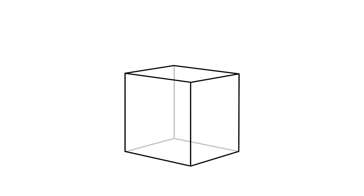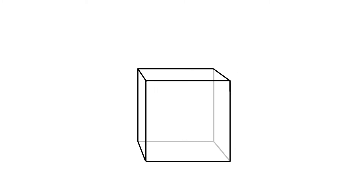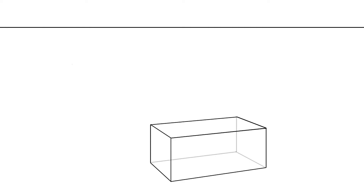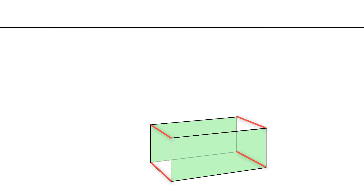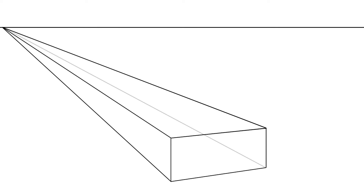If you want your drawings to look 3D, then you will need to create the same illusion. For a box to look like it has depth, its farthest sides will need to be smaller than its closer sides. Edges of a box will need to taper from the closer sides to meet the farthest sides. These edges taper to meet one of the farthest sides, and these edges taper to meet the other farthest side. If a box is long enough, its long edges will converge to a single point.